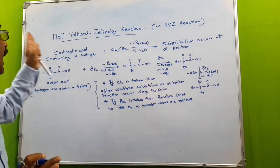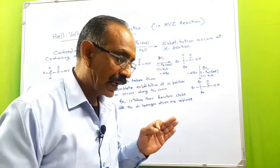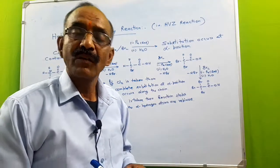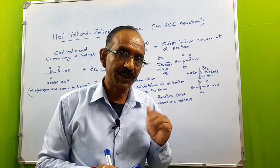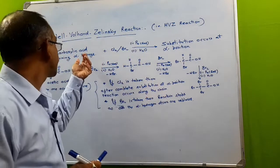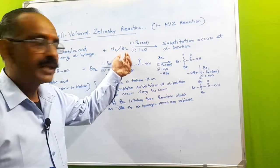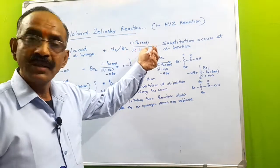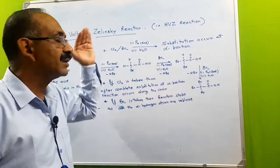So what is the Hell-Volhard-Zelinsky reaction? This reaction is exhibited by those carboxylic acids which have a hydrogen at the alpha position. The carboxylic acids are treated with chlorine or bromine in the presence of red phosphorus and water, and the alpha-hydrogens are replaced by the halogen.